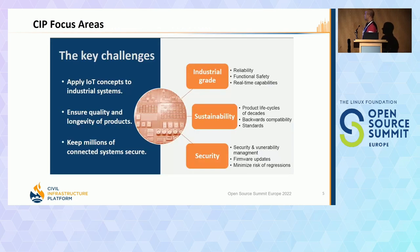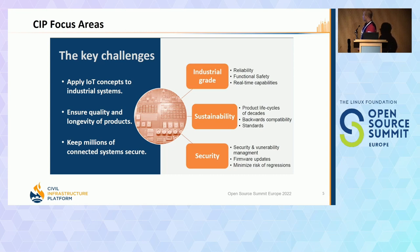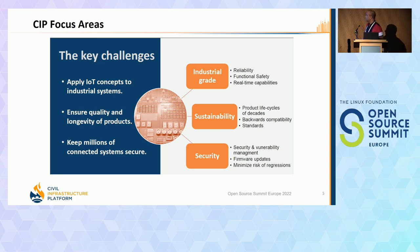The key challenges common across the industry are having industrial grade software which can be very reliable, functionally safe, and have real-time capabilities. Then sustainability — where the product can be used for very long durations with backward compatibility — and supporting standards like IEC and other security standards from different domains, plus security and vulnerability management and firmware update. CIP basically focuses on these areas to develop software which can address these key challenges.